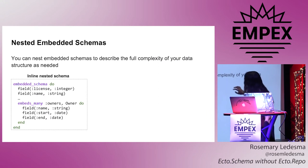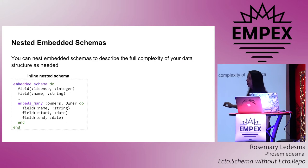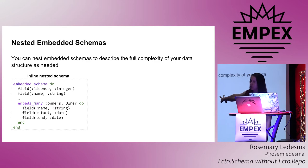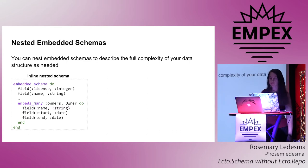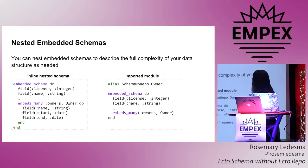As you start to talk about more complex data structures, you can nest those embeds. You can use embeds_many or embeds_one to talk about deeper structure. In this example I'm doing it inline — I've created another schema called owner and I'm describing what it consists of right there in the same block. Another way to accomplish the identical result is by having a separate module.